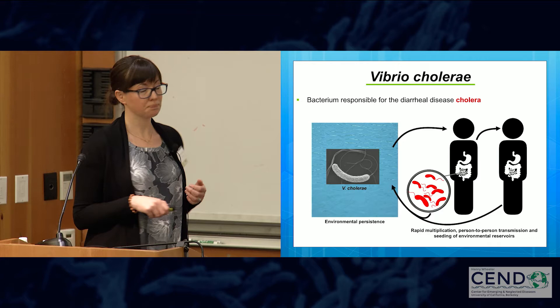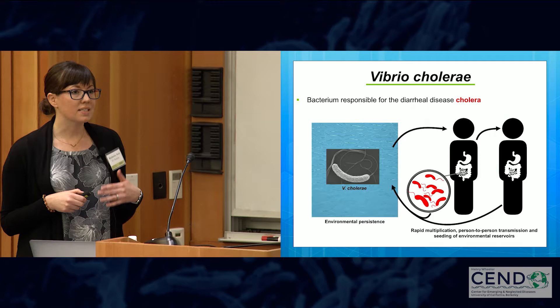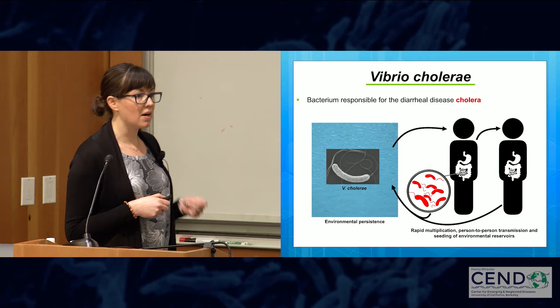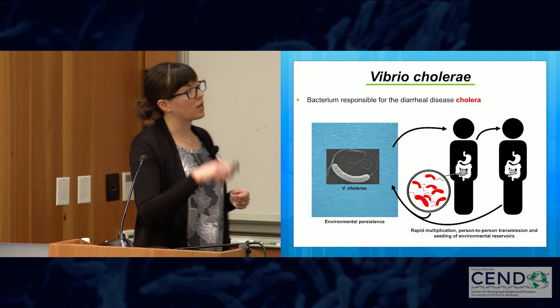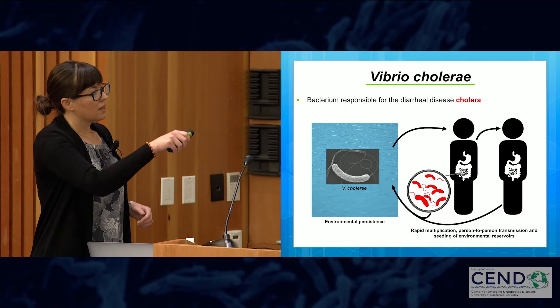The severe diarrhea can be rapidly dehydrating. In fact, an otherwise healthy human adult can succumb and die from dehydration within 12 hours of symptom onset. It can lead to very severe disease if left untreated. The diarrhea both facilitates the organism's ability to transmit back into the aquatic environment and reseed those reservoirs, as well as enabling transmission via fecal-oral contamination directly to other hosts.